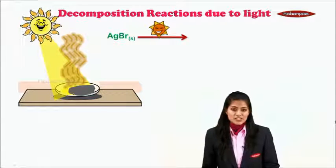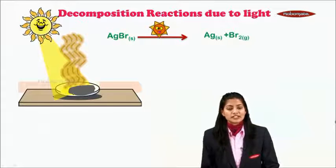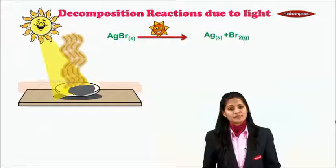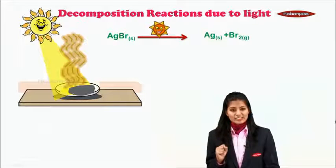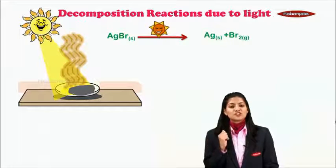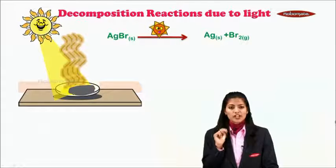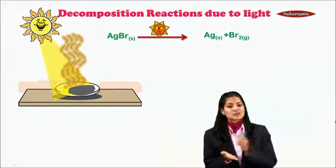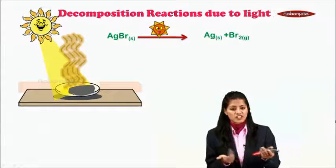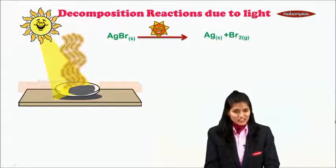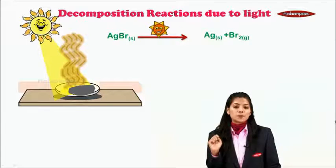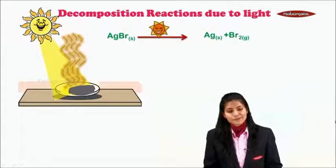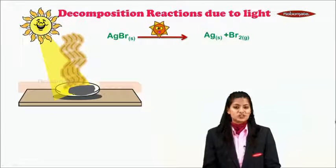That grey colored substance is nothing but silver (Ag), and the vapours formed are of bromine. In this reaction, one reactant in the presence of sunlight gave two simpler products: Ag and Br. There was a splitting up or breaking down reaction — a decomposition reaction — that took place only because of sunlight. So it was decomposition due to light.